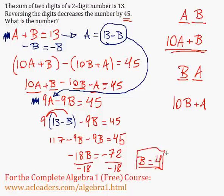So if B is 4, A is 13 minus B. So A is 13 minus 4, which is just 9.